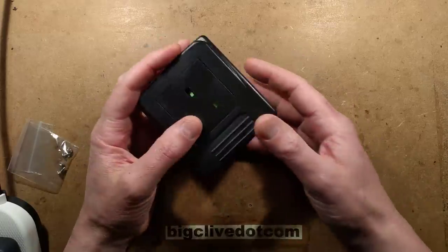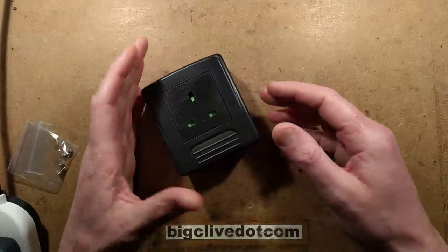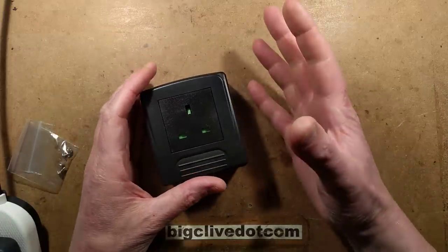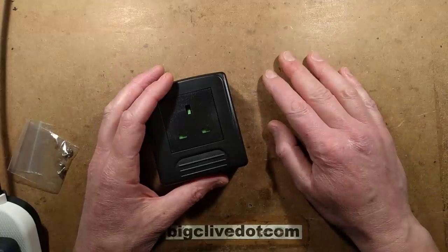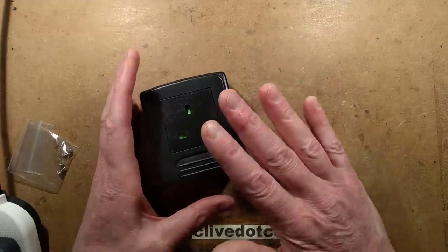However, Matt said what actually happens is that initially when it went faulty it would turn the router on and then about a second later turn it back off again. The relay was cutting out.